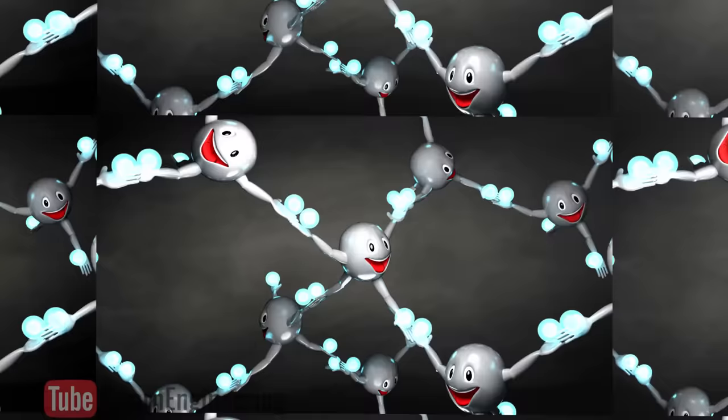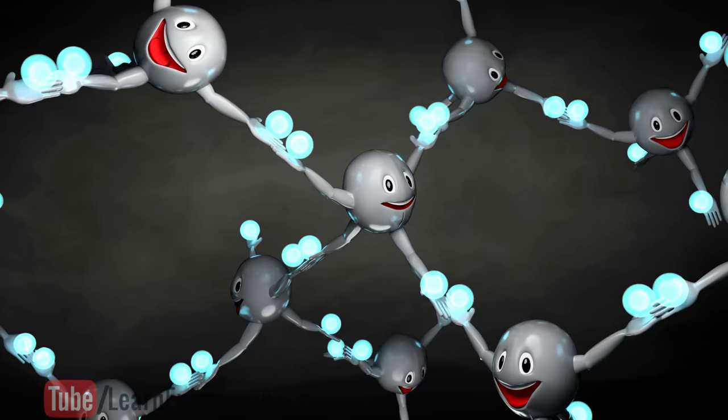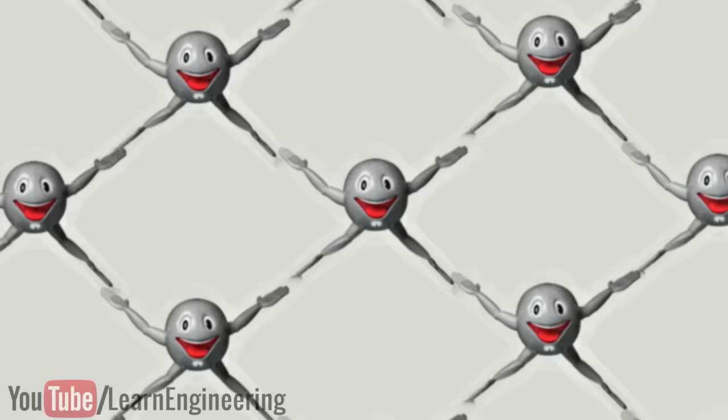When you are bonded with someone, you lose your freedom. Similarly, the electrons in the silicon structure also have no freedom of movement. To make the study easier, let's consider a 2D structure of the silicon crystals.